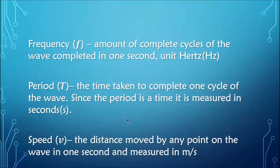Frequency is the number of cycles completed by the wave in one second. Period is the time taken to complete one cycle of the wave. Since the period is a measure of time, it is measured in seconds, and frequency is measured in units of hertz.